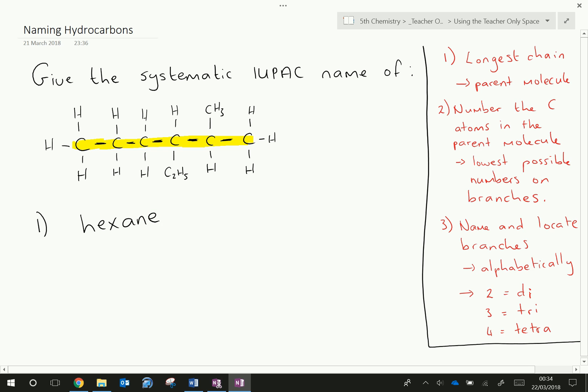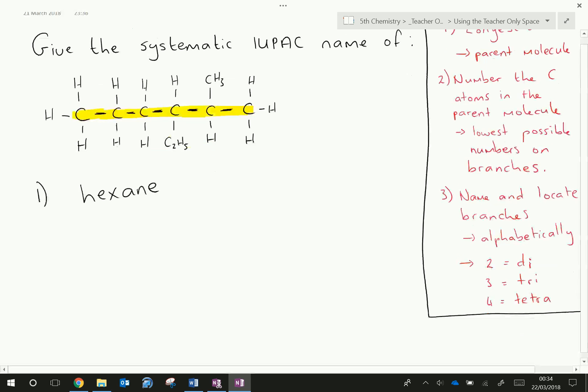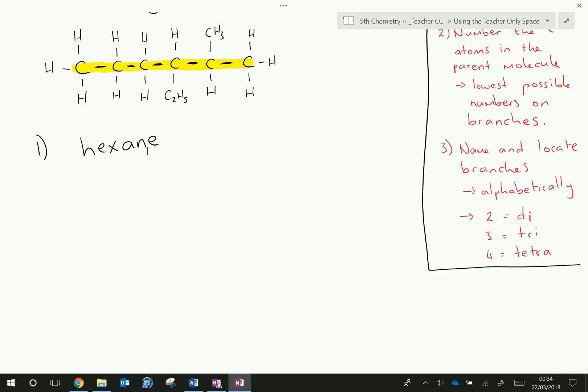My second step then is to number my carbons. And remember, I have to number them so that my branches have the lowest possible numbers. So I'm going to draw this out twice just so that we can be extra clear on which way around it should be. So 1, 2, 3, 4, 5, 6 carbons.